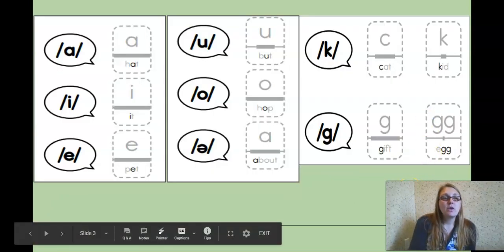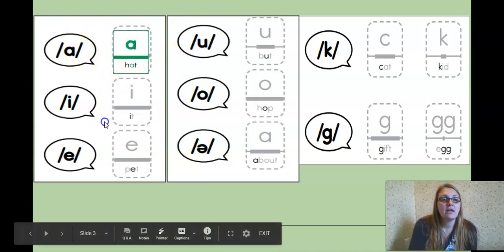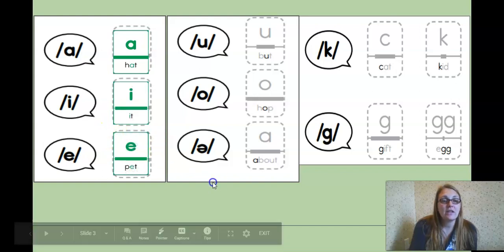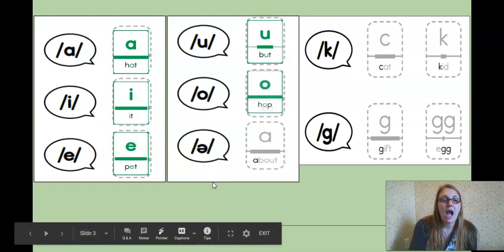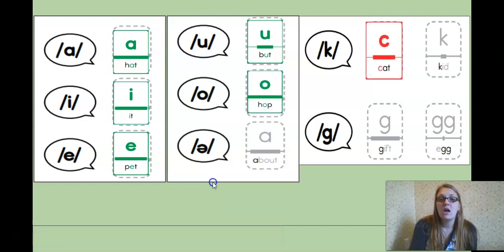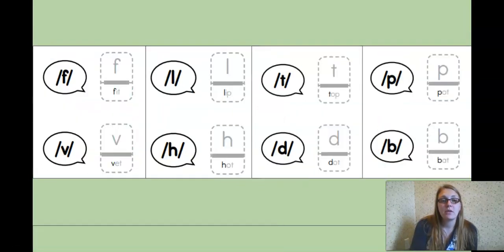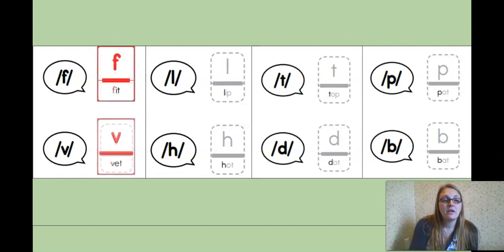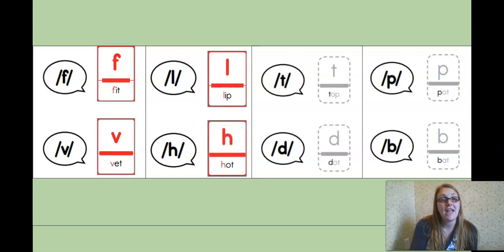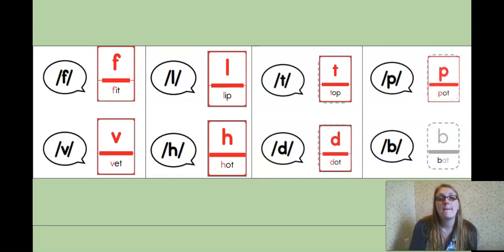Okay, so quick review of all the letter sounds spellings we have learned. We have letter A, letter I, letter E, letter U, letter O. For the k sound we have both C and K, C being the more common. For g we have letter G. For f, letter F. V, L, letter L, H, letter H, T is for T, D we have letter D, P we have letter P, and B we have letter B.